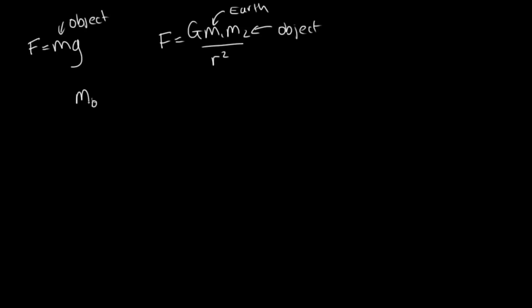So we've got the mass of the object times g is equal to the gravitational constant times the mass of the Earth times the mass of the object over r squared.